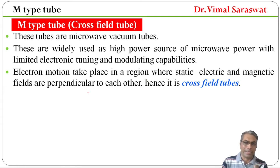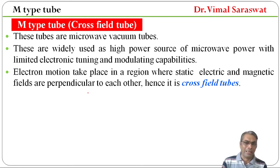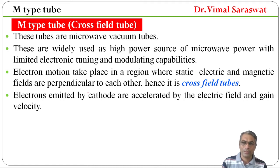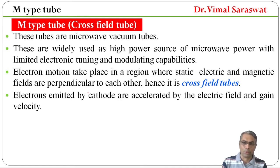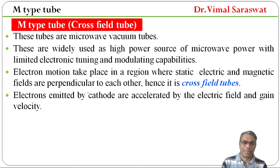Electron motion takes place in a region where static electric and magnetic fields are perpendicular to each other. Hence it is called a cross-field tube. In the M-Type tube, the electron's motion occurs in a region where static electric and magnetic fields are perpendicular to each other.